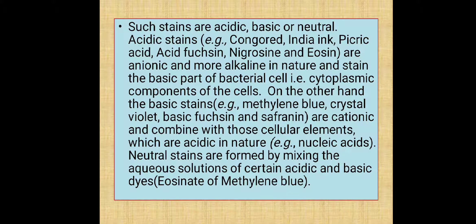Acidic stains such as Congo red, India Ink, Picric Acid, Acid Fuchsin, Negrosin, and Eosin are anionic and more alkaline in nature, and stain the basic part of the bacterial cell — that is, the cytoplasmic components of the cells.